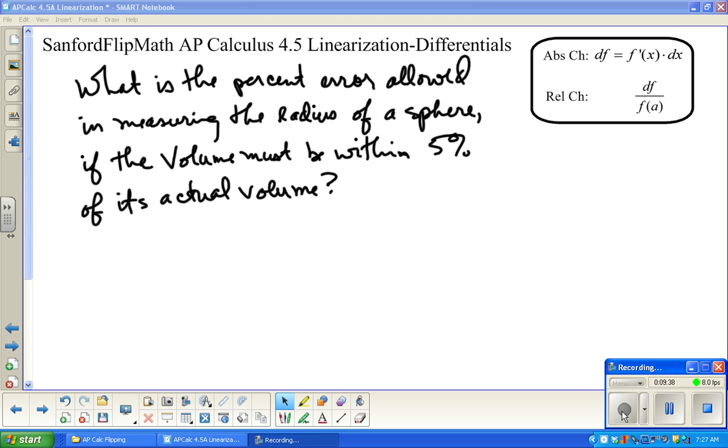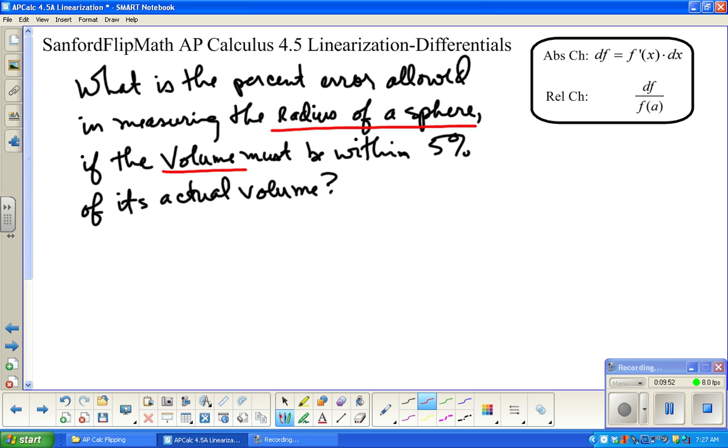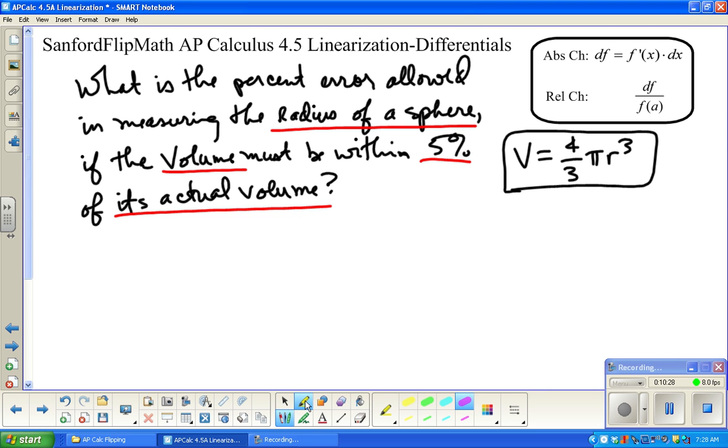Let's do another one. So here's a little more interesting problem. I mean, it's the same idea. It says, what's the percent error allowed in measuring the radius of a sphere? So we're going to talk about, we want to measure the radius of a sphere if the volume of that sphere must be within 5% of its actual volume. So the idea is that we're going to measure a sphere and so we can calculate its volume. But we need to talk about what kind of precision we need. Well, in order to do this, you need to know the volume of a sphere.